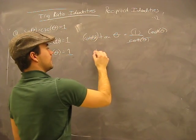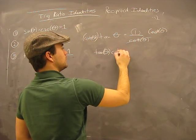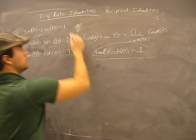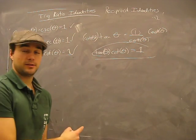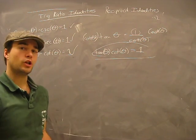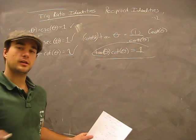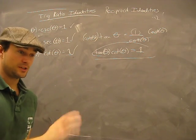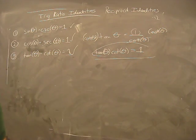Cancel, cancel — we have tan theta times cotangent theta equals 1. That's why this is so easy: it's all grade 7 and 8. What you do to one side, you do to the other — equation manipulation. You'll see how fun this gets with future examples. They look scary but they're so easy.